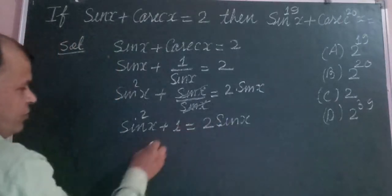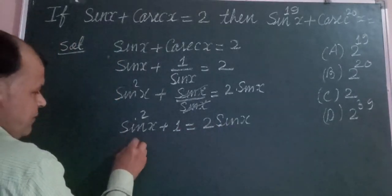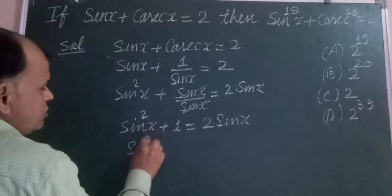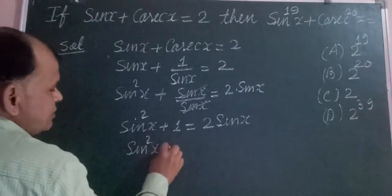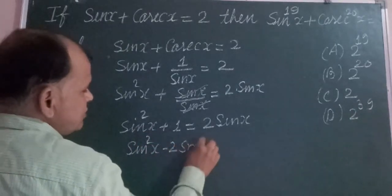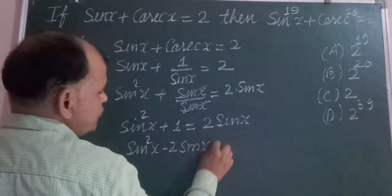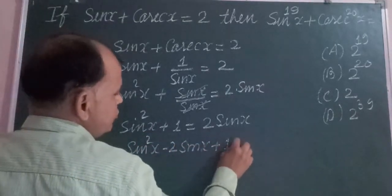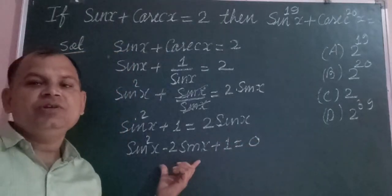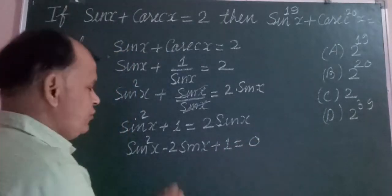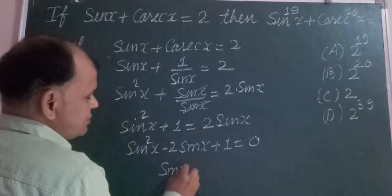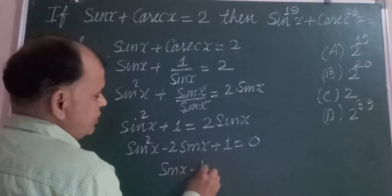Now we bring 2 sin x to the left side, so we get sin squared x minus 2 sin x plus 1 equal to 0. And this factors as sin x minus 1 squared equals 0.